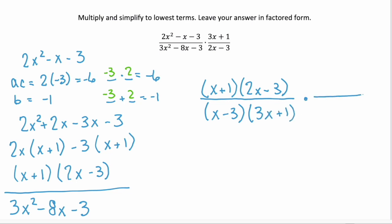Now let's look at the second rational expression. The numerator, 3x plus 1, there's no GCF and you can't factor it. So we'll just write it as 3x plus 1. And the denominator, same thing. No GCF and it can't be factored.